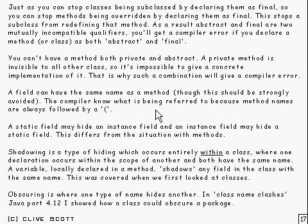You can, if you want to, have a field with the same name as a method — although this is discouraged. The compiler can tell what's being referred to because method names are always followed by a left bracket, ignoring any possible white space. Regarding fields specifically: a static field can hide an instance field, and an instance field can hide a static field — which is quite different to the situation with methods.